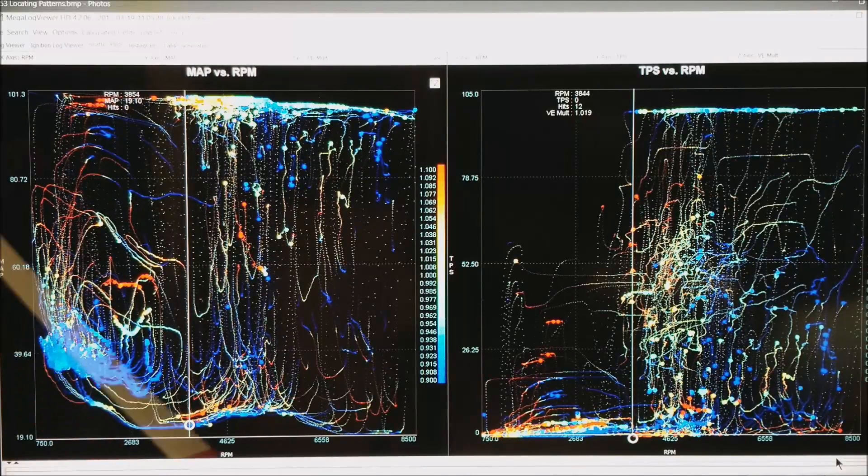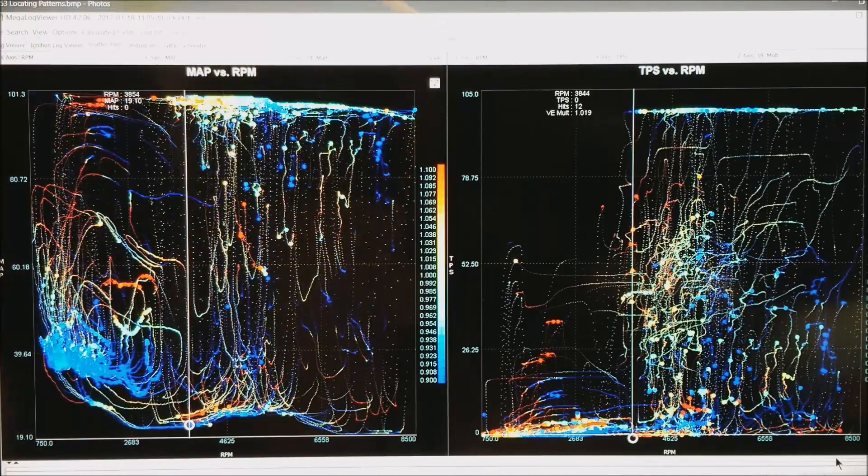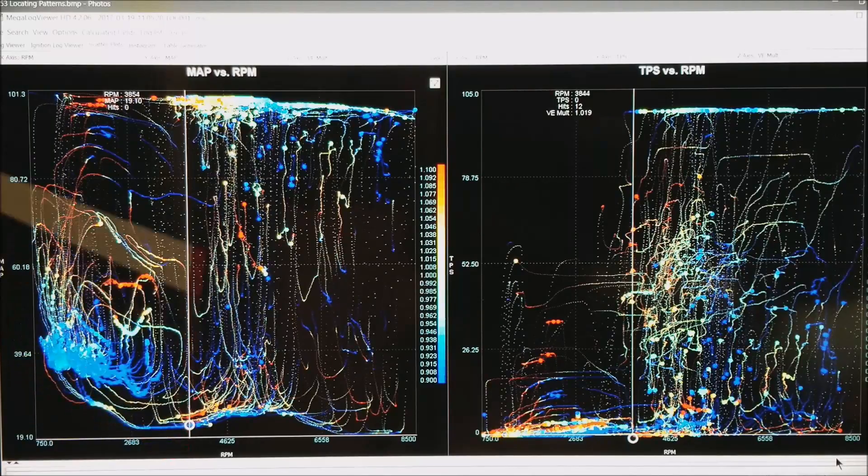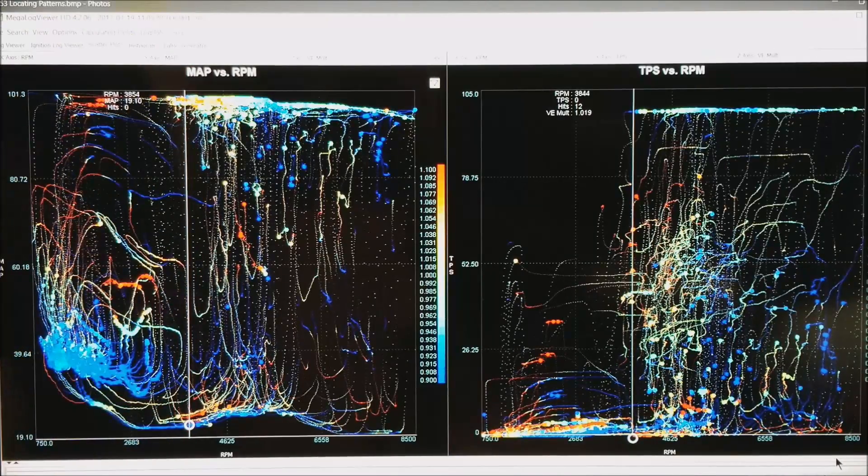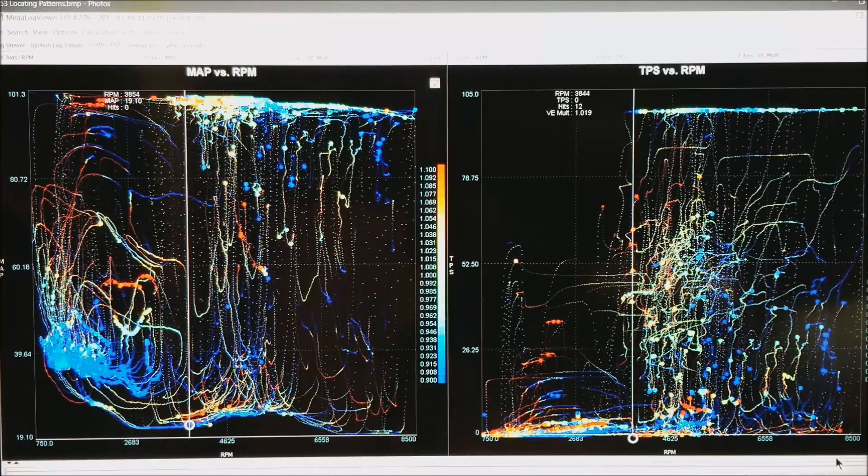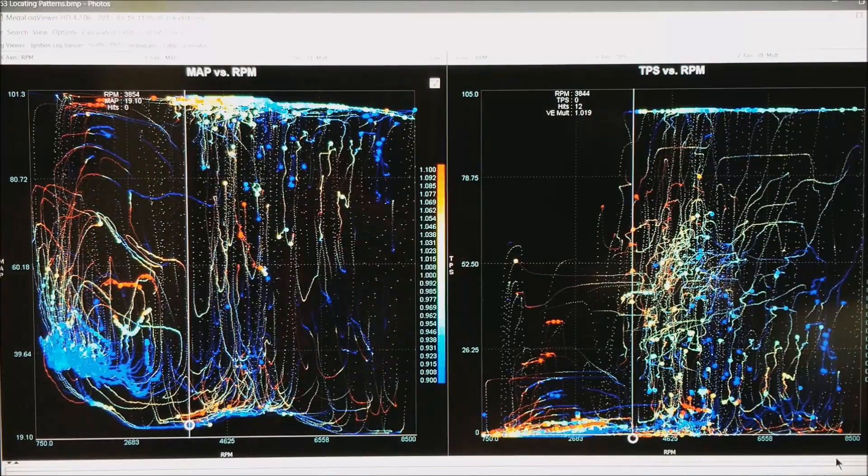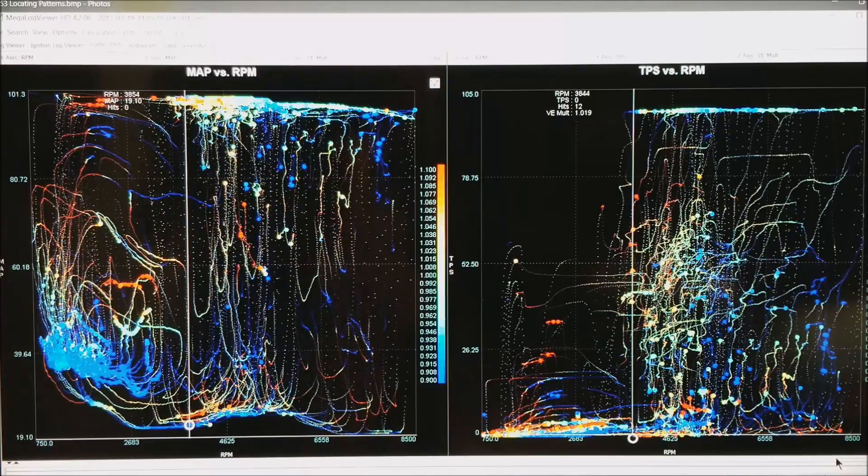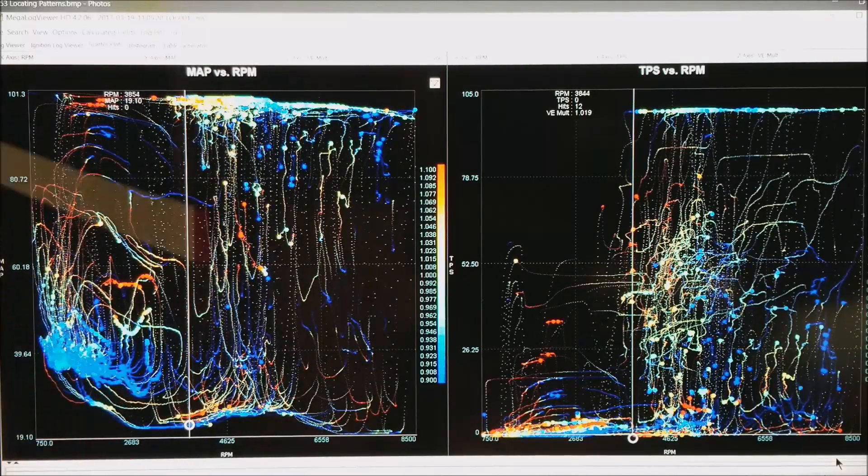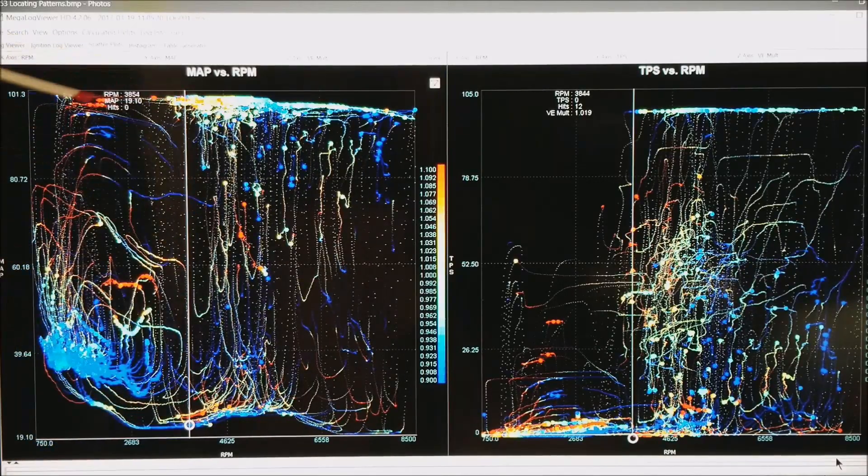What I have is Speed Density on the left and Alpha N on the right. And generally, there will be some point where any given motor is probably easier to tune in Alpha N or throttle-based tuning above some RPM range. And below some RPM range, it is probably easier to do in Speed Density.